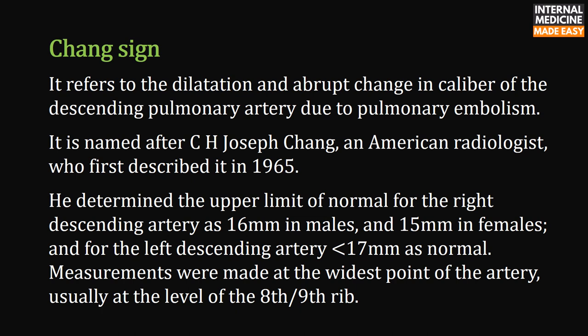The Chang sign refers to the dilatation and abrupt change in caliber of the descending pulmonary artery due to pulmonary embolism. It is named after C.H. Joseph Chang, an American radiologist who first described it in 1965. He determined the upper limit of normal for the right descending artery as 16 mm in males and 15 mm in females, and for the left descending artery less than 17 mm. Measurements were made at the widest point of the artery, usually at the level of the eighth or ninth rib.